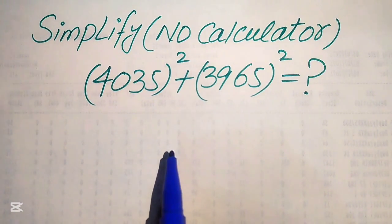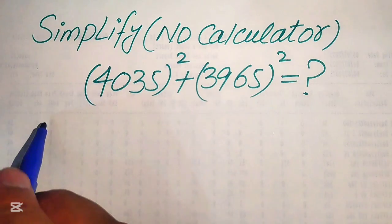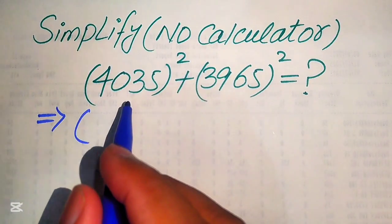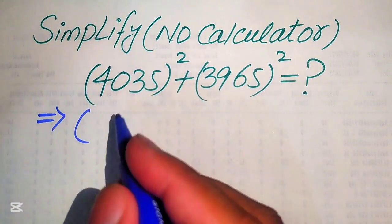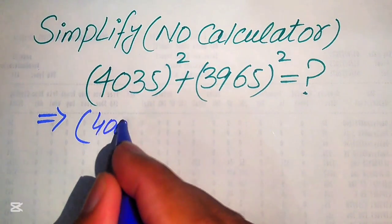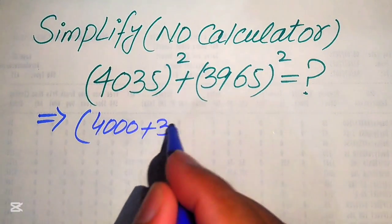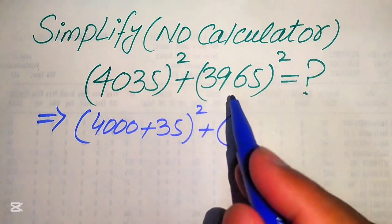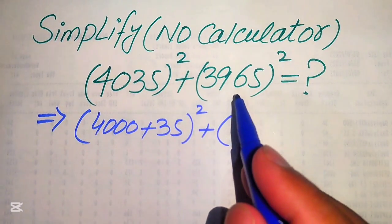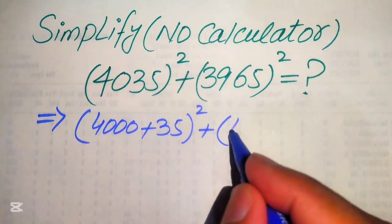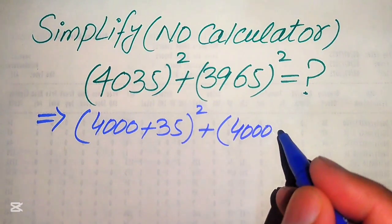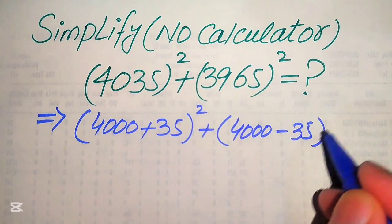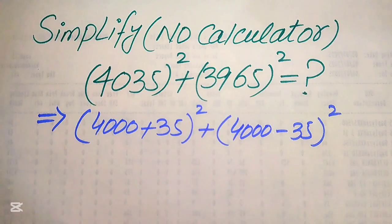Here we first need to rewrite this expression by breaking 4035 as 4000 plus 35, whole square, and in the same pattern we break 3965 as 4000 minus 35, whole square.